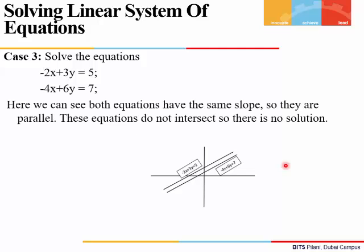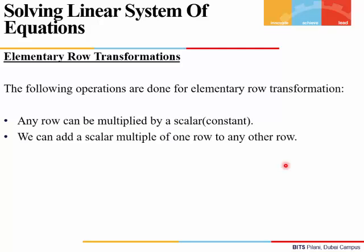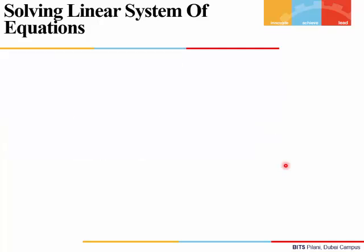In the third case, if we plot both lines, we see they are parallel — they have the same slope and will never intersect, so there is no solution. To solve a system, we use elementary row transformations, which reduce the coefficients of the system to smaller values and make many of them zero, making it easier to solve. The three operations are: any row can be multiplied by a scalar; we can add a scalar multiple of one row to another row; or we can interchange the rows.